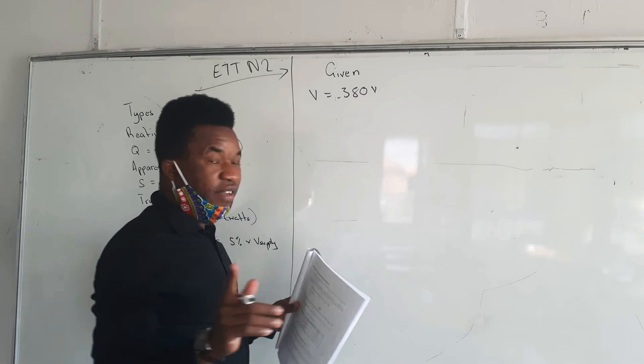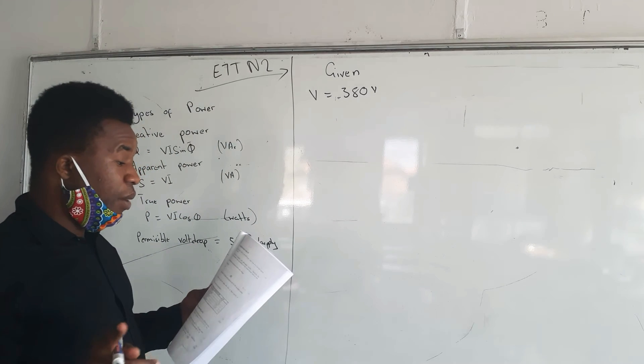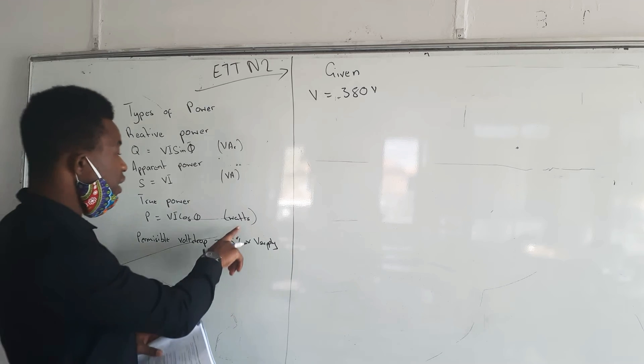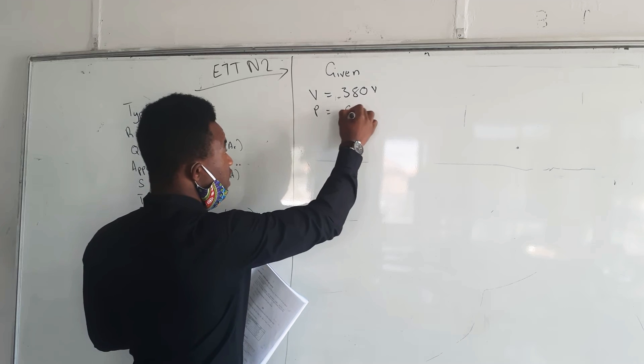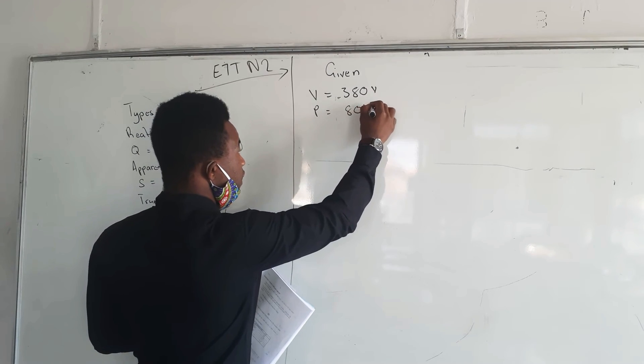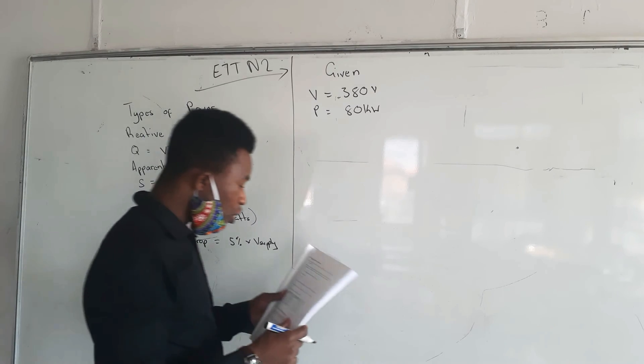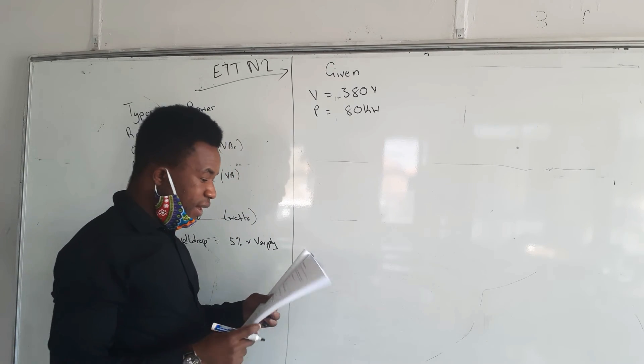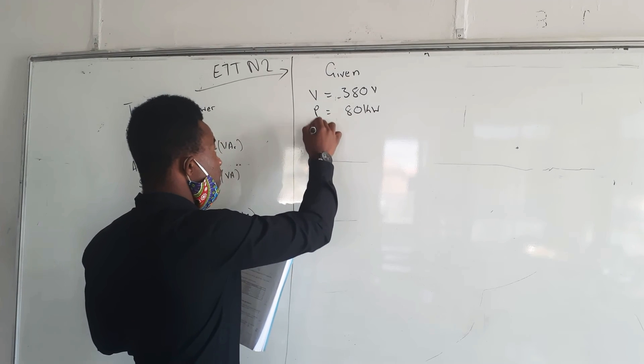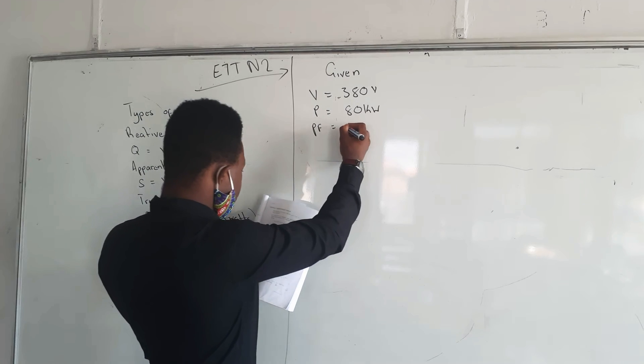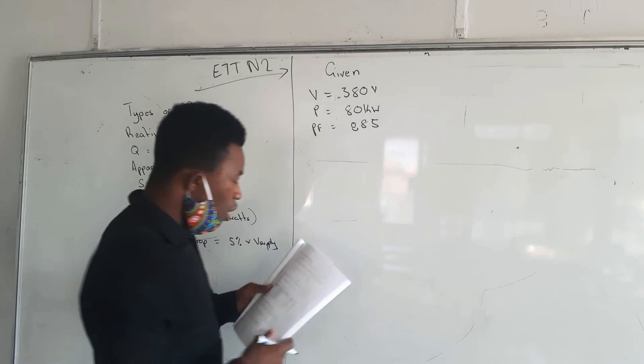They give us power of 80 kilowatt, and how are we going to determine which type of power? It's 80 kilowatt measured in what? So it's going to be true power, which is P equals 80 kilowatts or 80 times 10 to the power 3. They also give us the power factor, PF of 0.885.